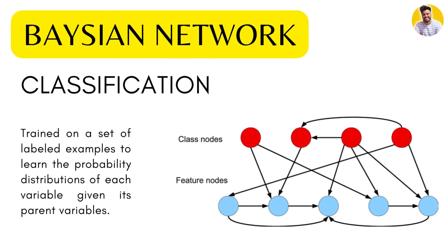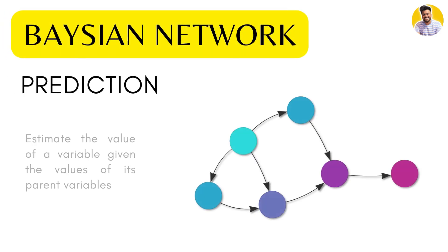In classification tasks, the Bayesian network is trained on a set of labeled examples to learn the probability distributions of each variable given its parent variable. Once the network is trained, it can be used to classify new instances based on variable values. In prediction tasks, a Bayesian network estimates the value of a variable given the value of its parent — for example, in weather systems, it can estimate the probability of rain tomorrow given current weather conditions.